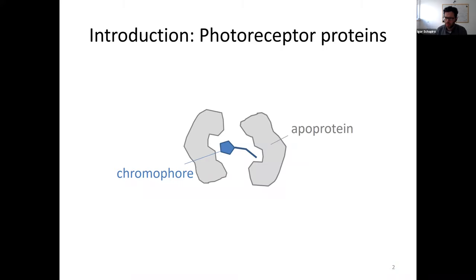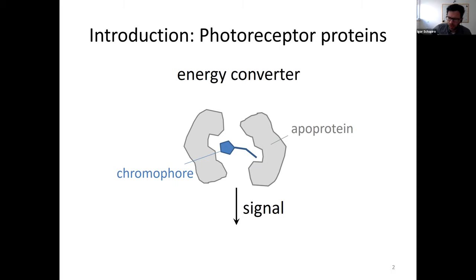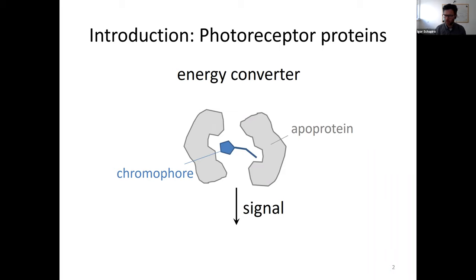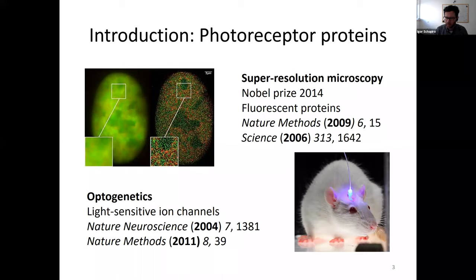From the biological level, if you look at it from the technological perspective, these proteins are basically energy converters — they take a photon and produce molecular energy or even electrical energy. When they convert the energy, the output from the protein is a signal. That's why these photoreceptor proteins have been utilized in various applications.